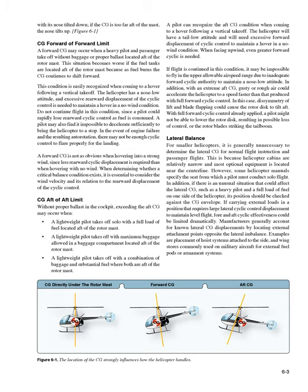A pilot may also find it impossible to decelerate sufficiently to bring the helicopter to a stop. In the event of engine failure and the resulting autorotation, there may not be enough cyclic control to flare properly for the landing. A forward CG is not as obvious when hovering into a strong wind, since less rearward cyclic displacement is required than when hovering with no wind. When determining whether a critical balance condition exists, it is essential to consider the wind velocity in relation to the rearward displacement of the cyclic control.